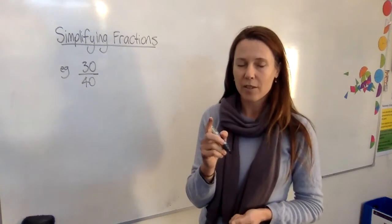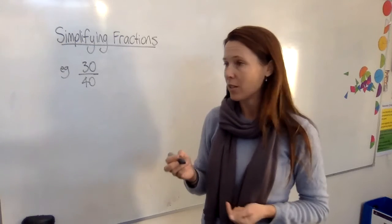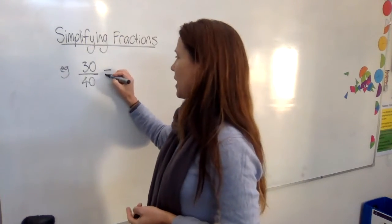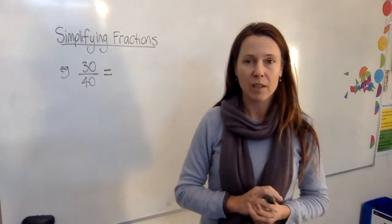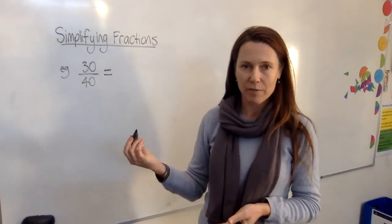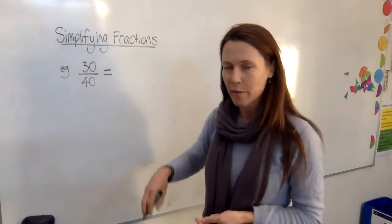Now, two ways that you can do this. I want you to watch both methods and you'll see the advantage and disadvantage of each one. One way to do it is just to look for any old factor that they share and divide by it. So you might say, oh, they're both even numbers, so they must be divisible by two. I'm going to halve both of them.